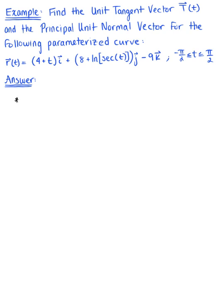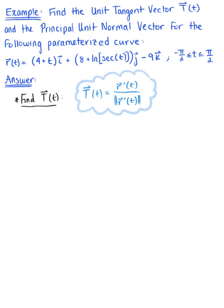The first thing we need to do is find the unit tangent vector. We know that the unit tangent vector, capital T, is defined by the tangent vector divided by the magnitude of our tangent vector. So, in order to find the unit tangent vector, we need to differentiate — we need that tangent vector and then we'll find its magnitude.